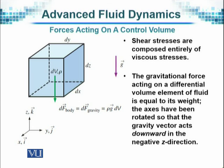The gravitational force acting on a differential volume element is equal to the weight, and the axes have been rotated so that the gravitational vector acts downward in the negative Z direction. We have shown here a small differential volume that we already saw in a control volume. But here, it is an enlarged image. And since gravity acts only in the downward direction, as I have mentioned several times, you see only this component that is non-zero and we have to consider it.